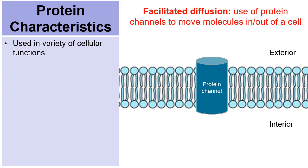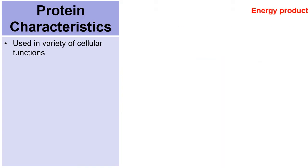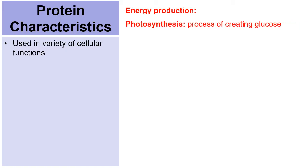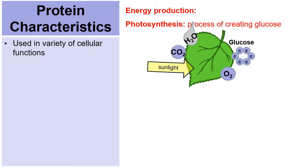Facilitated diffusion is another example of a cell function requiring proteins. Here's a picture of our cell membrane. Here comes a glucose molecule. And through the protein channel labeled, glucose can be brought into the cell to be used as needed. When it comes to photosynthesis and creating glucose, here's a leaf. They take in water and carbon dioxide and sunlight and will create glucose and oxygen. None of these are proteins, but proteins are used along the way.